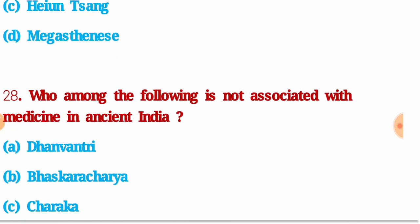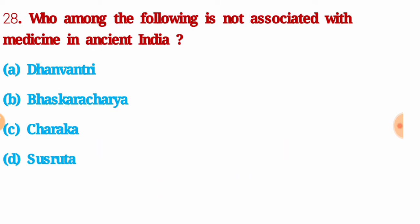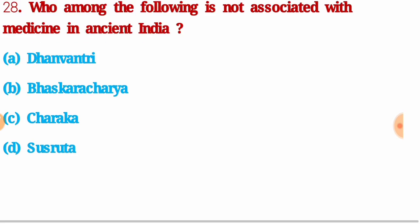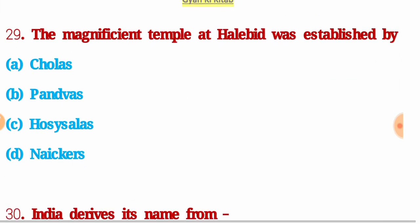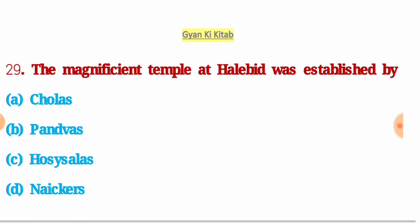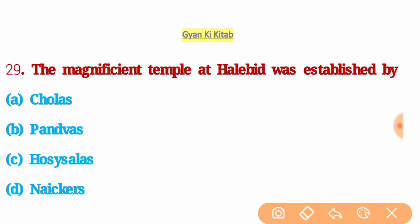Next question: who among the following is not associated with medicine in ancient India? The right answer is option B: Bhaskaracharya. Next question: the magnificent temple at Halebid was established by — the right answer is option C: Hoysalas.